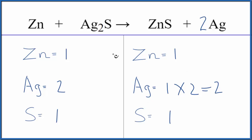Everything's the same on both sides. One zinc on each side, two silver atoms, and one sulfur. The key here, make sure you put the coefficient in front of the element symbol.